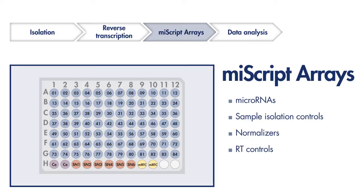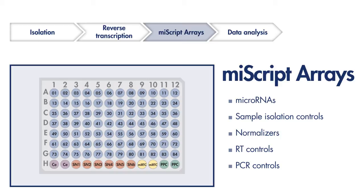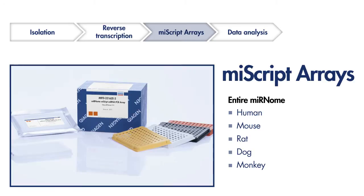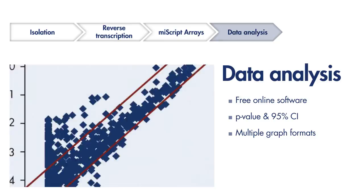Some of the pathways focus on specific types of cancers, such as breast, ovarian, prostate, and brain, while others focus on specific varieties of microRNA, such as circulating microRNAs from serum and plasma. For discovery experiments, we also have miScript PCR arrays that cover the entire miRNome.